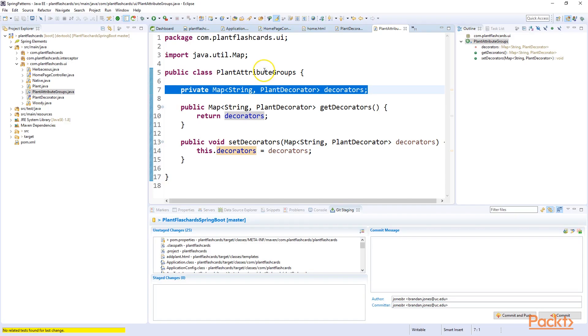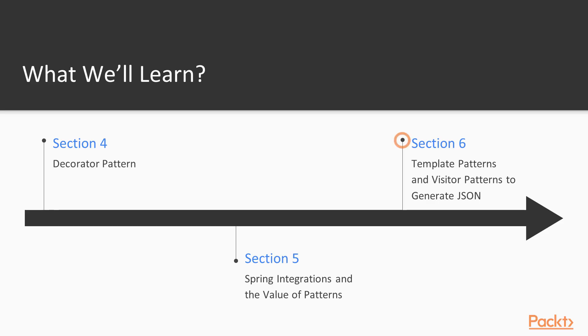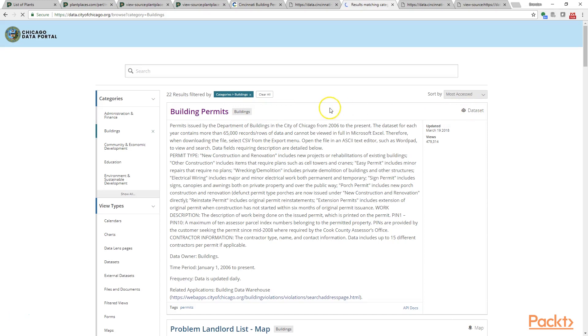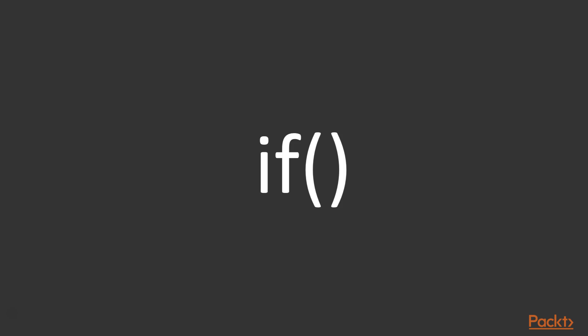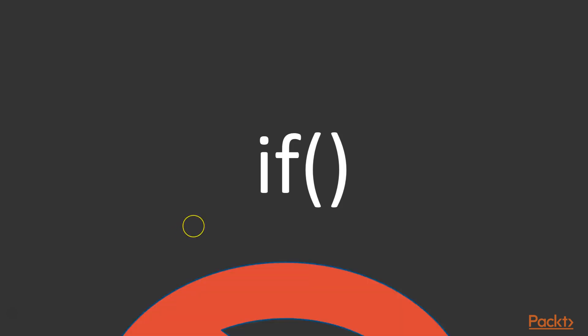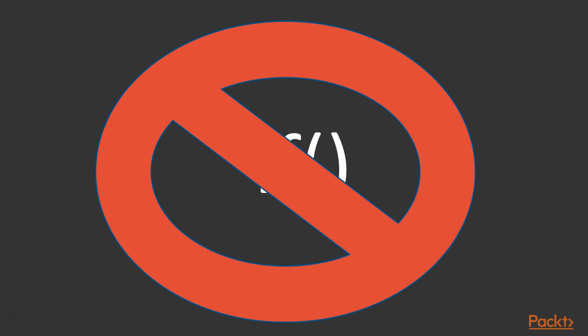In Section 5 we'll take a deeper dive into Spring annotation and the value of patterns. Then in Section 6 we will take a look at the template and visitor pattern and how we can use these two patterns to generate JSON. Now you may ask yourself, why should I learn patterns? If you take a look at what I have on the screen here, it's an if-test — something we're very much used to as software developers. But what we'll find as we explore design patterns is that we like to get rid of the if-test, because the if-test is often an indication that we're not doing a good job with object-oriented design. Something that could be done with an if-test can be done much more efficiently with a design pattern, making future expansion much simpler. That's a theme we'll see many times throughout this course.